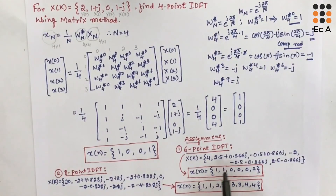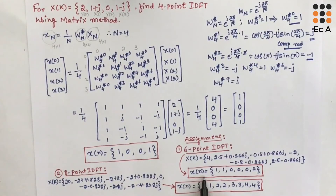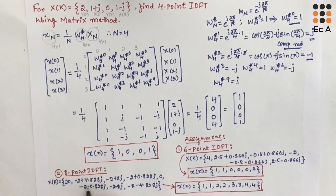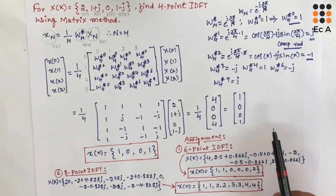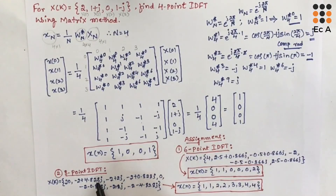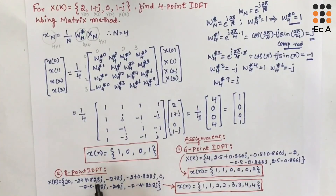Using the same analysis, you can do assignments for 6-point DFT for the given sequence — you will get x(n) = {1, 1, 0, 0, 0, 0, 2} — and for 8-point DFT, you will get x(n) = {1, 1, 2, 2, 3, 3, 4, 4}. Remember the Twiddle factor matrix for 6-point and 8-point DFT, take its complex conjugate, write the IDFT matrix, and solve.